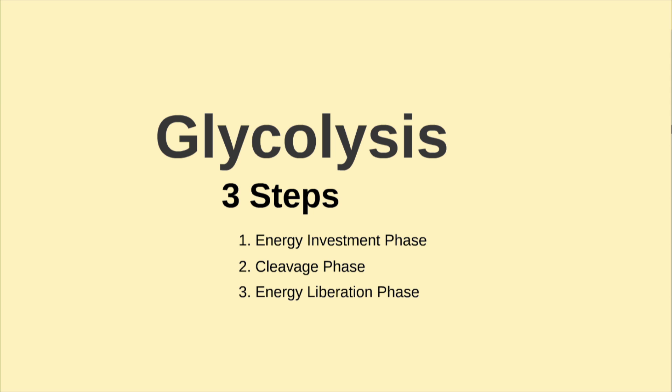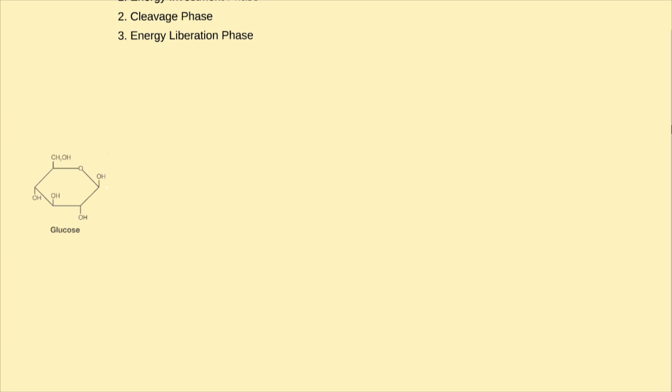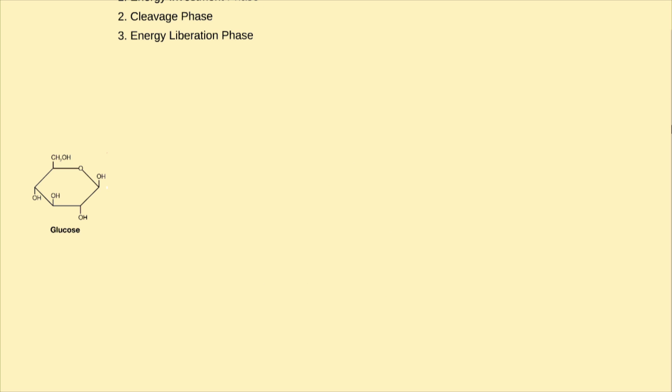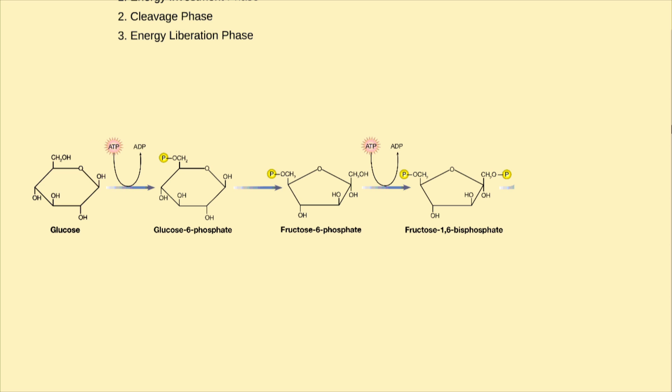The energy investment phase starts with glucose and uses two ATP to create fructose 1,6-bisphosphate. Two ATP molecules are hydrolyzed and their phosphates attached to glucose, converting it to fructose 1,6-bisphosphate. This raises the free energy of glucose and allows later reactions to be exergonic.